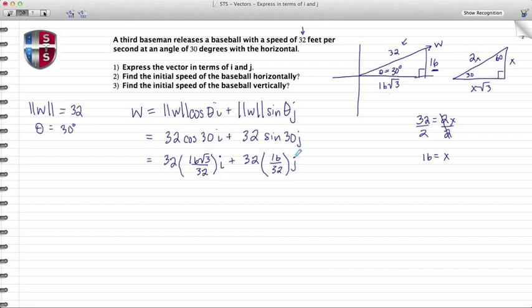Then we can start to resolve this. To make the multiplication easier, I can cancel out these 32s and I'm left with 16√3 i. For my second term, I can again cancel out the 32s and I'm left with 16 j. So here I've completed part one where I've taken vector W and expressed it in the components i and j.